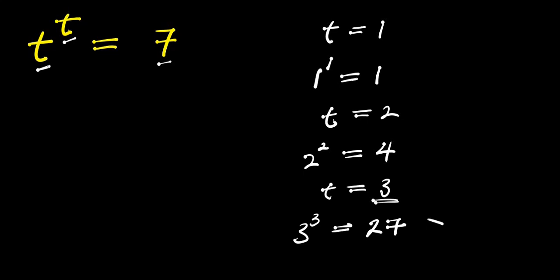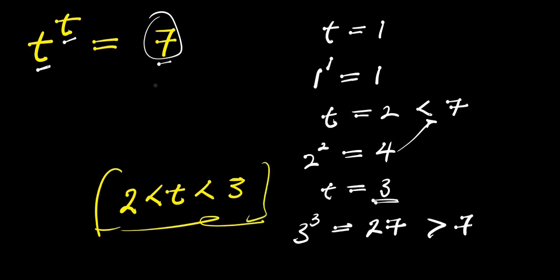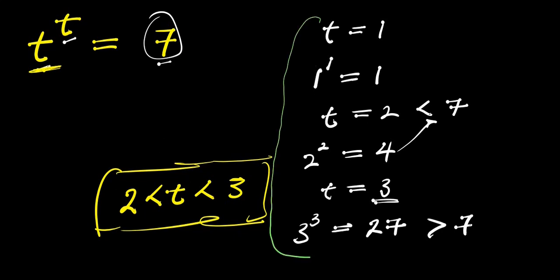we have 27, and this 27 is far greater than 7, which is what we are looking for. And also, when t equals 2, we have 4, and that 4 is less than 7. Now, at this particular point, we can find out the range of values of t that will satisfy this equation — that will make the left-hand side, when raised to the power of itself, give you 7. So, having gotten this, the next thing will be to solve and find the actual value. We cannot continue testing like this; we need to solve and find the value of t that will actually satisfy this equation.